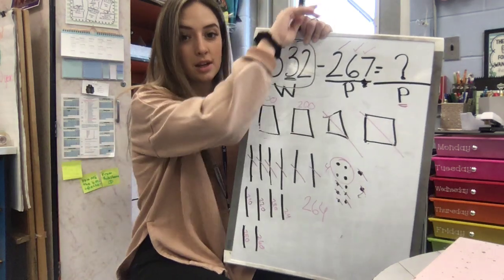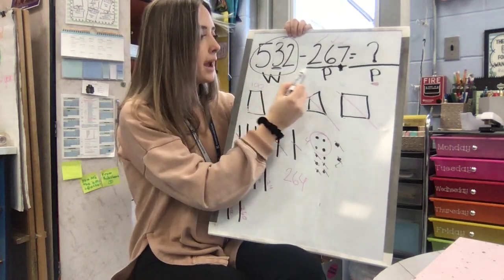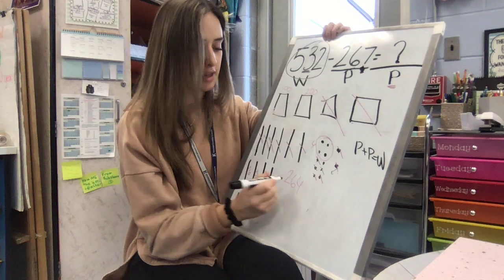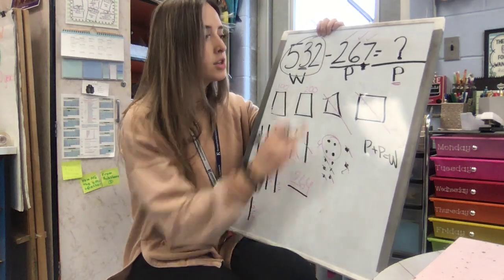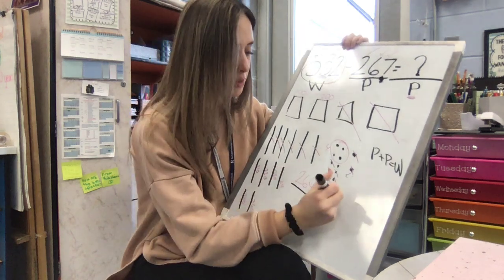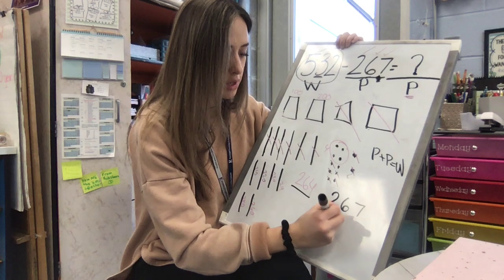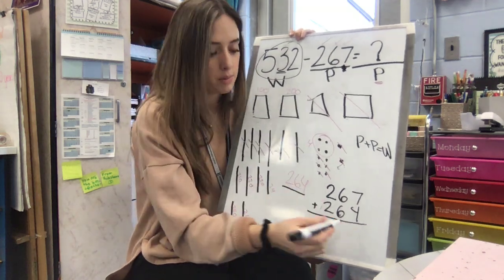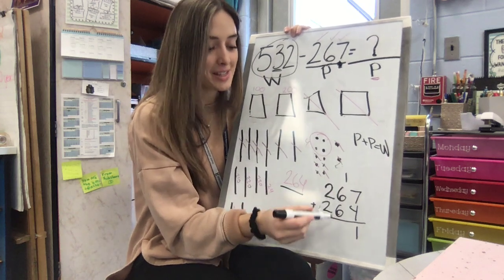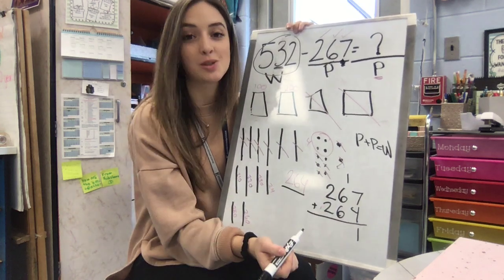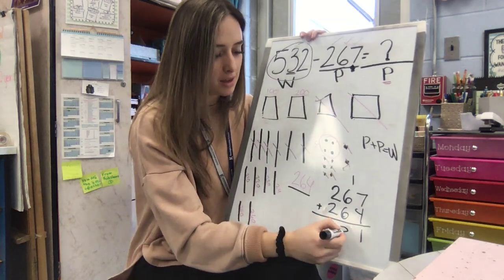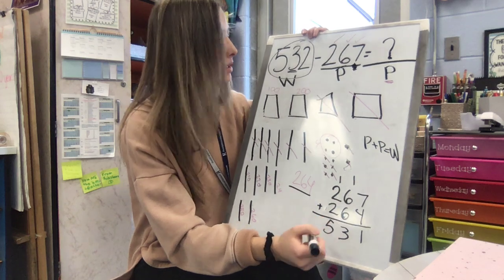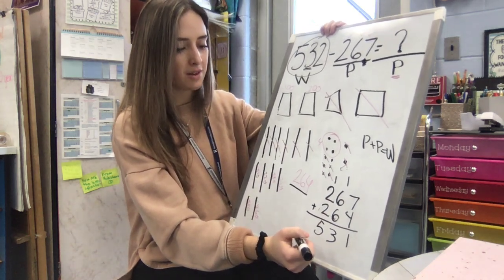Now we're really good here in second grade. So we're going to check our answer. I know that whole minus part equals part. But I also know that if I put two parts together, I would get my whole. So that's how we can check our answer. So we think our other missing part is 264. So let's add 267 plus 264. 7 plus 4, I know that 7 plus 3 equals 10. So 7 plus 4 is 11. I got my doubles here. So 6 plus 6 is 12. Plus 1 more is 13. But 13 tens. So write my 3 for my tens. And regroup. 2 plus 2 is 4. Plus 1 more is 5. 531.